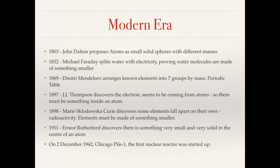In the modern era, we have some interesting dates on the screen. Basically, more and more chemical elements are discovered. And then in 1869, Mendeleev arranges these elements into seven groups, and basically invents the periodic table.